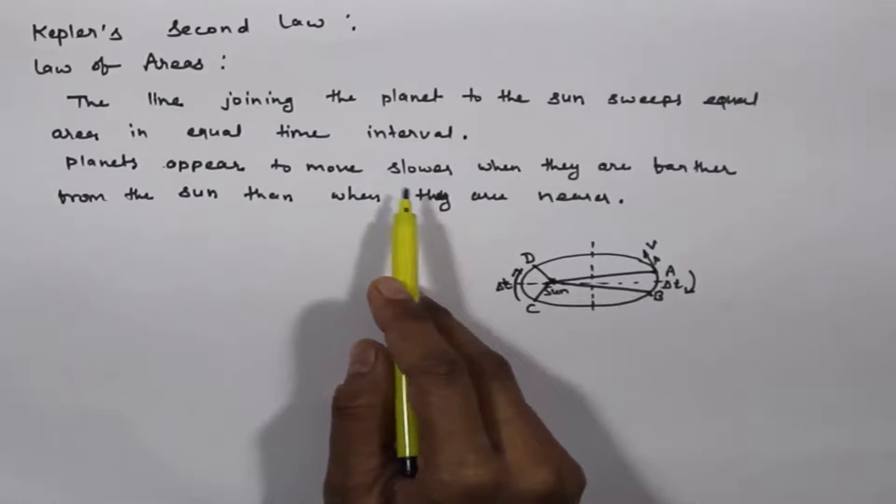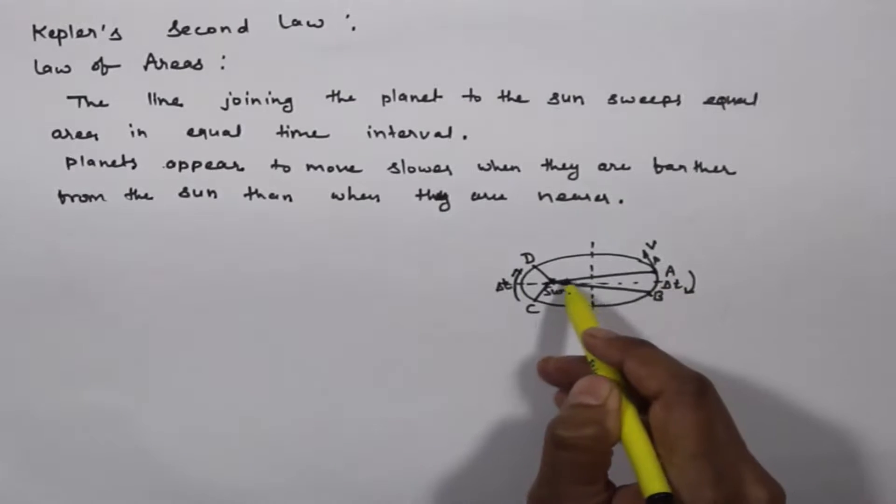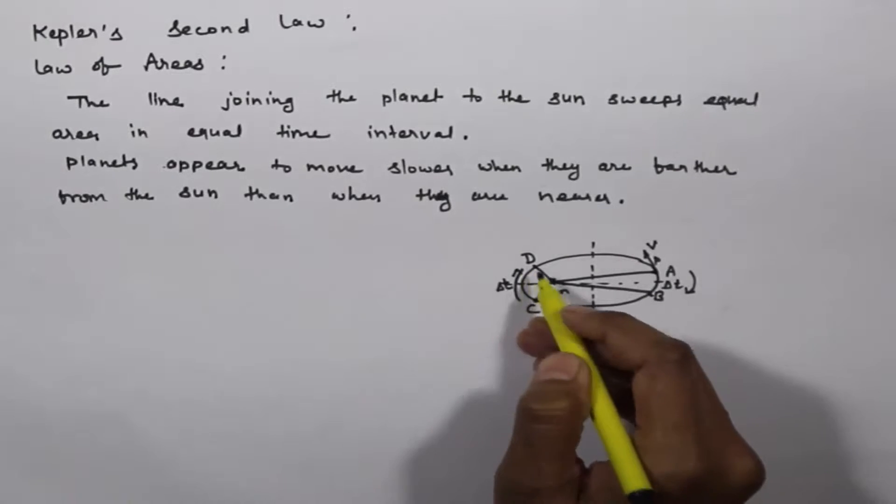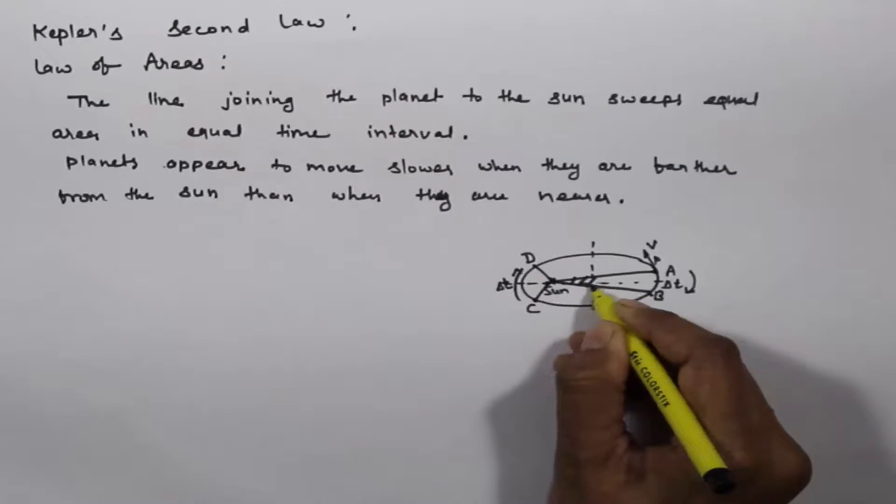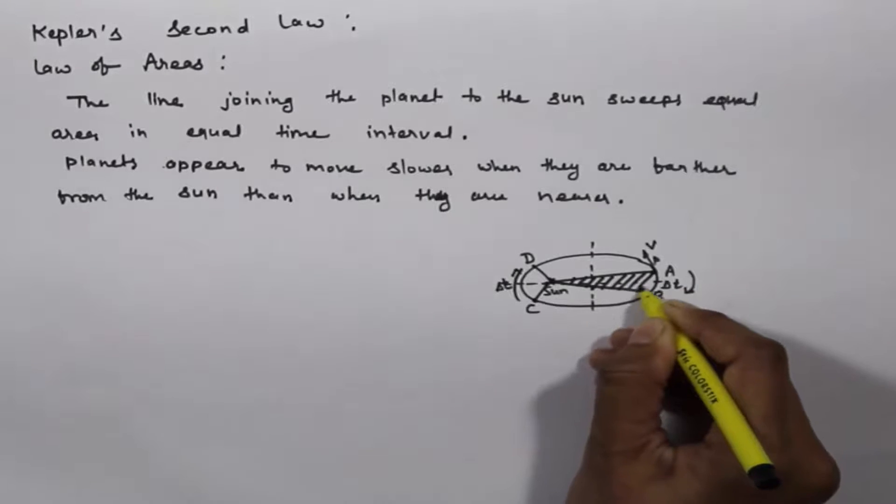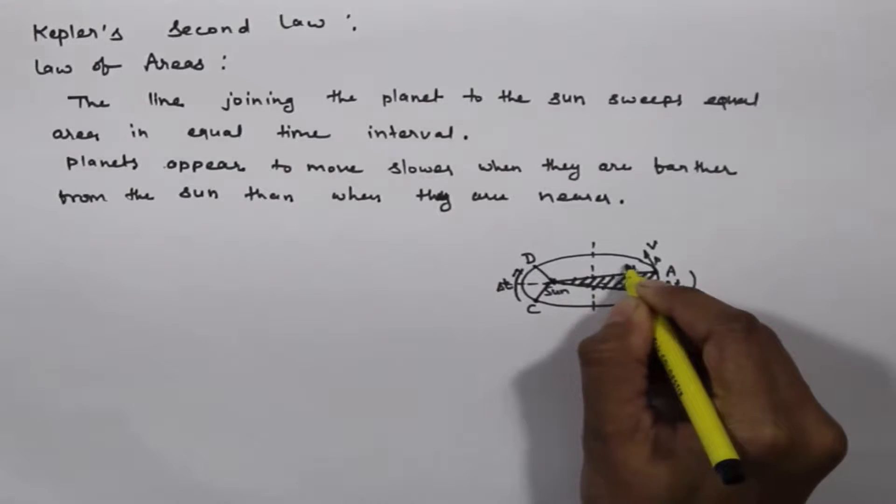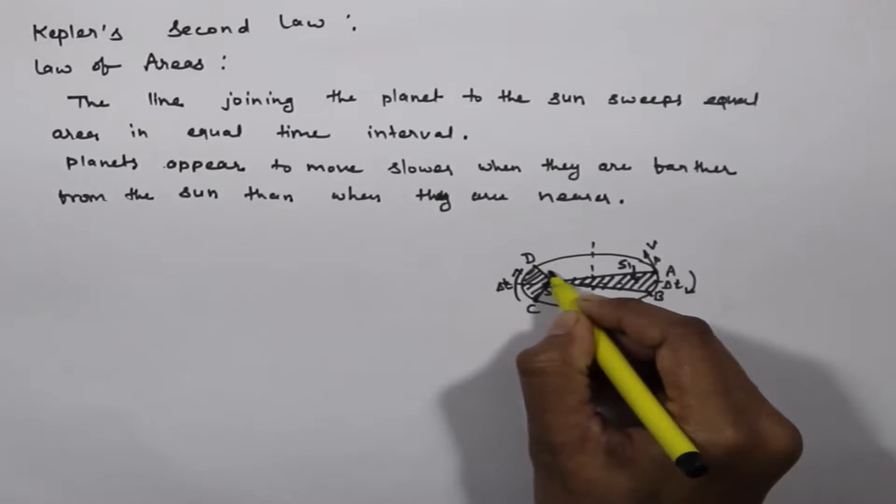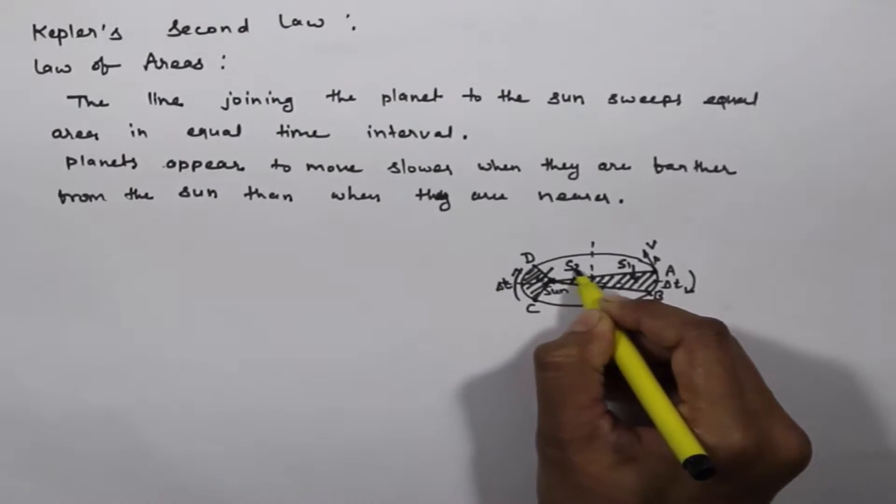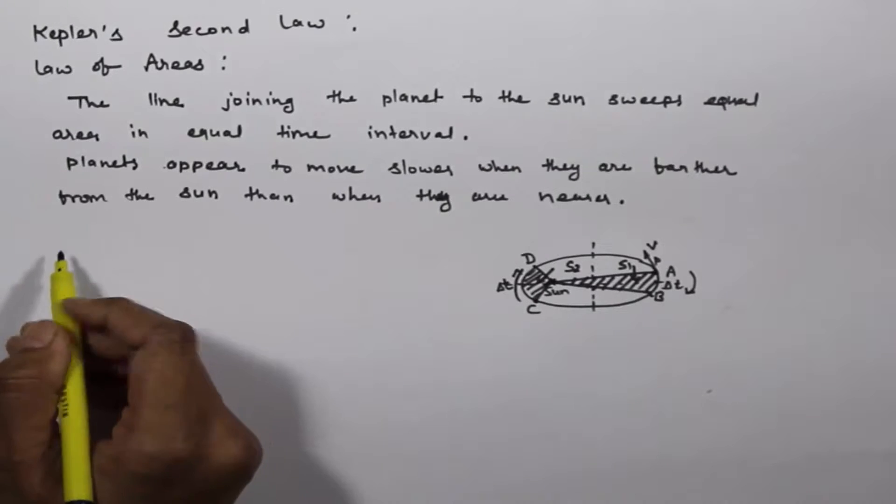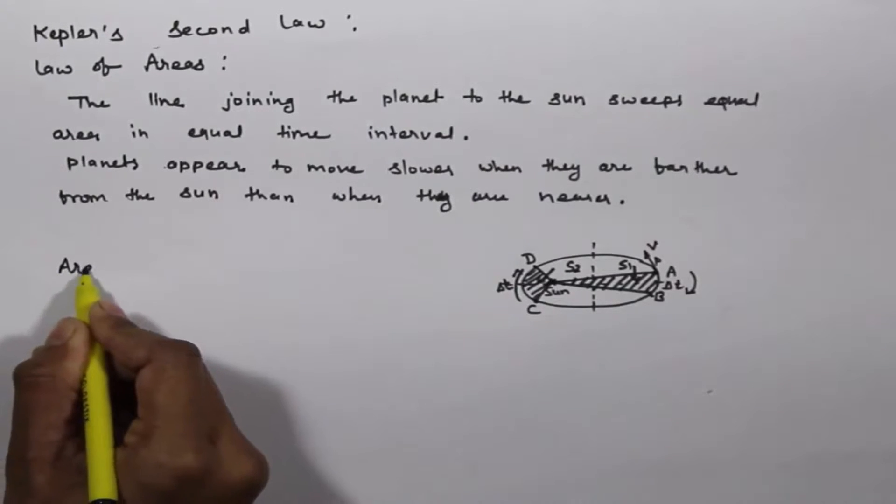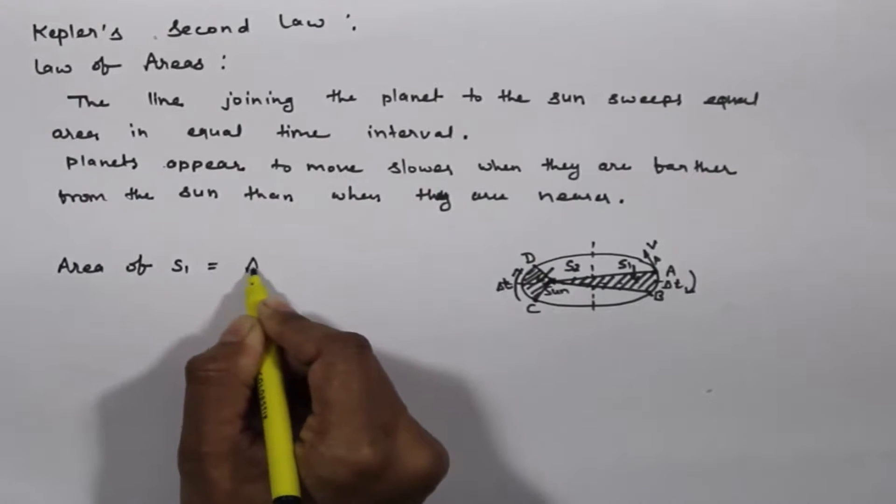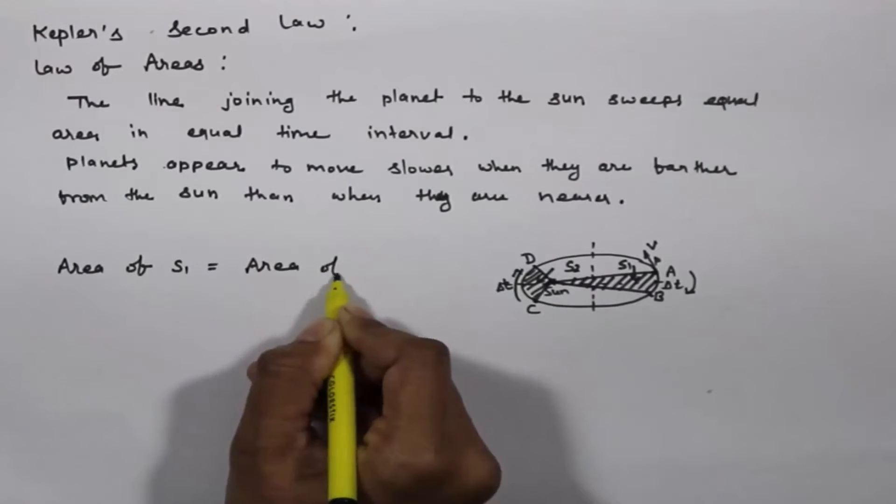By Kepler's law, the planet at far distance moves slower and the planet at short distance moves faster. This shaded area is S1 and this area is S2. Then by Kepler's law, the area of S1 is equal to the area of S2.